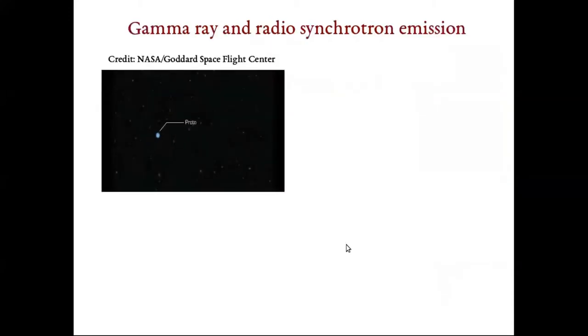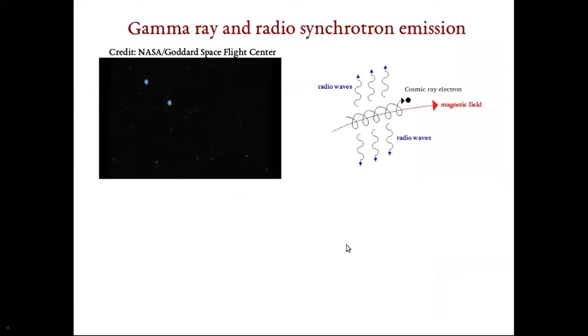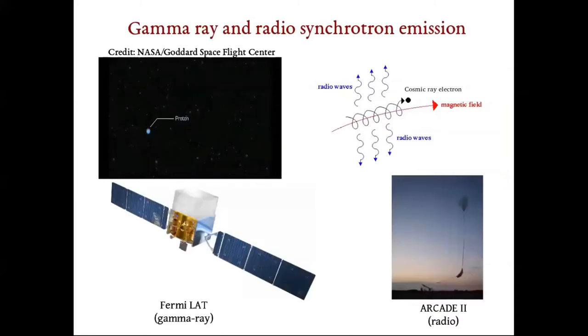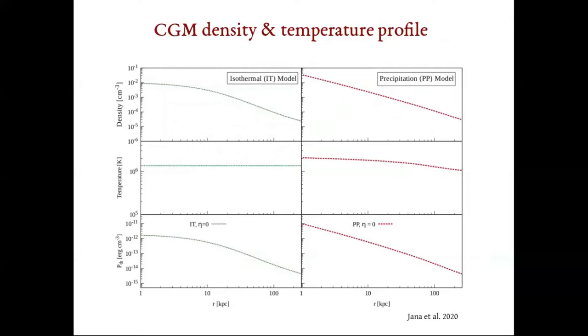Cosmic ray protons interact with CGM protons and produce neutral pions. These neutral pions immediately decay into gamma-ray photons. On the other hand, cosmic ray electrons interacting with the CGM magnetic field produce synchrotron emission in radio bands. We used Fermi data for the gamma-ray photons and the ARCADE2 balloon-borne radio observation data to constrain the cosmic ray population.